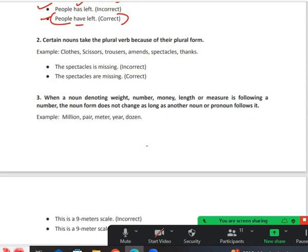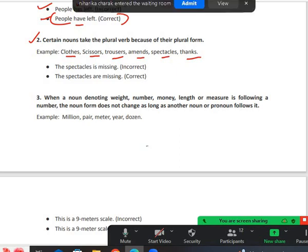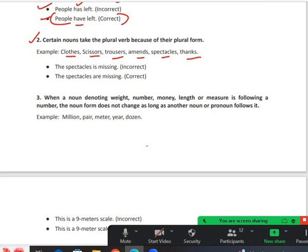The second rule says certain nouns take the plural verb because of their plural form. For example: clothes, scissors, trousers, amends, spectacles, thanks. There are some nouns which are already plural. With plural, obviously, the helping verb you need to be very attentive. We had subject-verb agreement. Do you remember? Yes sir.